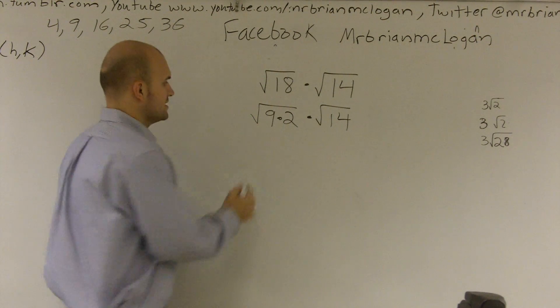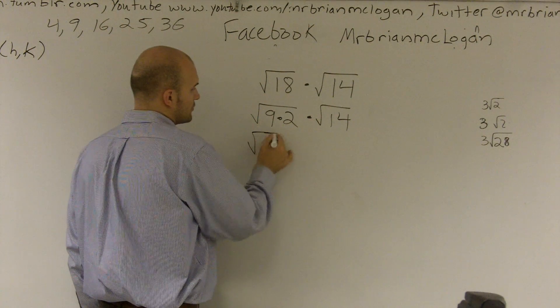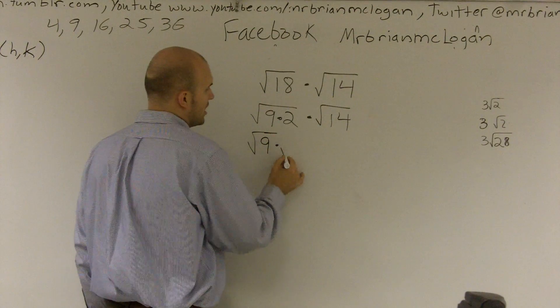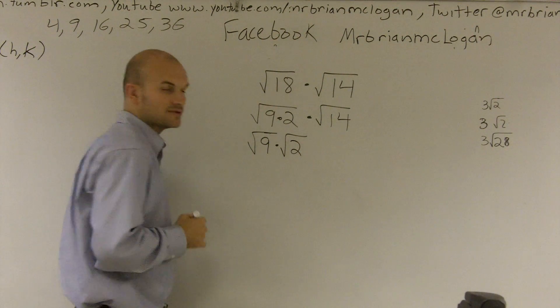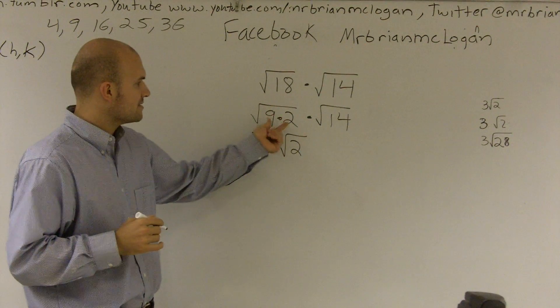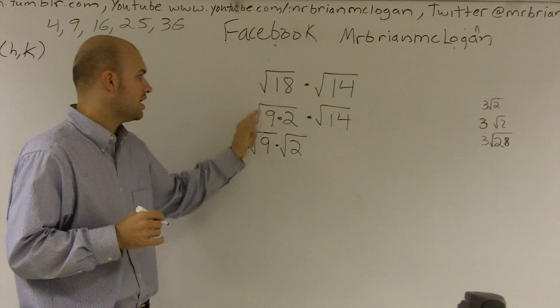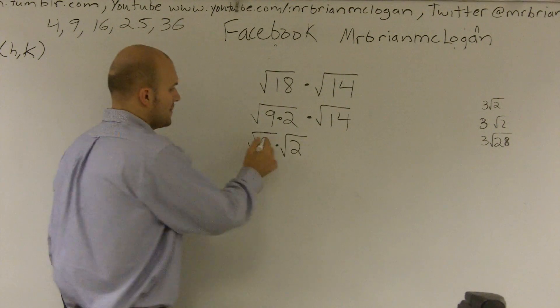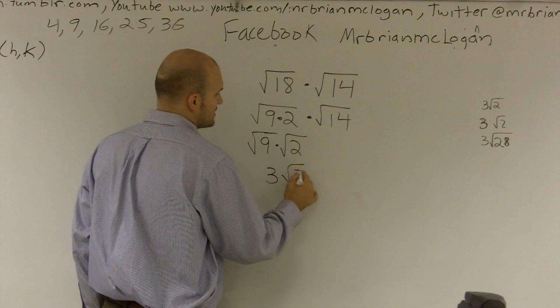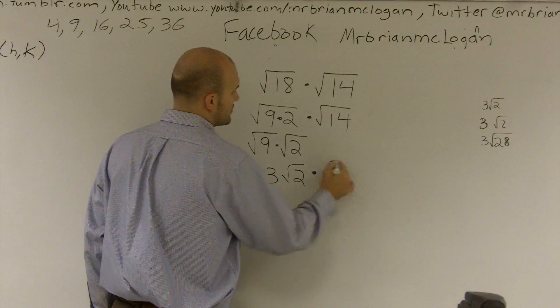Well, the reason why this is helpful is because the rules of radicals allows me to split up my two radicals. So since I'm doing multiplication, I can actually split up taking the root of both of these. Therefore, now I obtain 3 times square root of 2 times square root of 14.